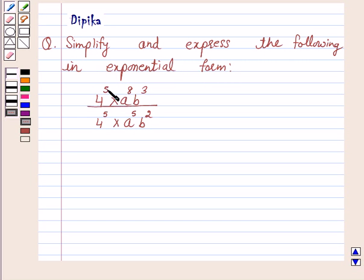4 is to power 5 into a raised to power 8 b raised to power 3 over 4 is to power 5 into a raised to power 5 b square.